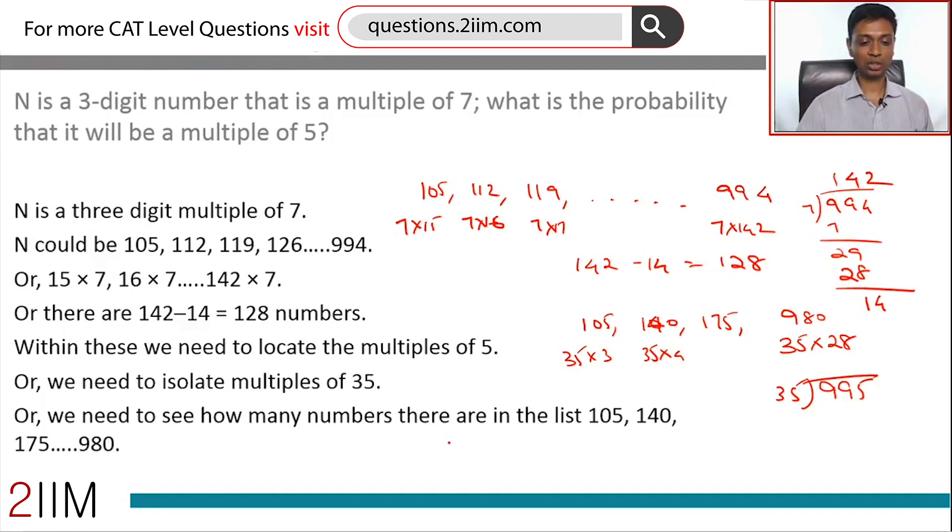So, out of the first 28 multiples of 35, we are leaving out 2, so there are 26 on this list. The probability that we are looking for is 26 upon 128. Out of 128 numbers in the list, 26 work for us, so this is 13 by 64.